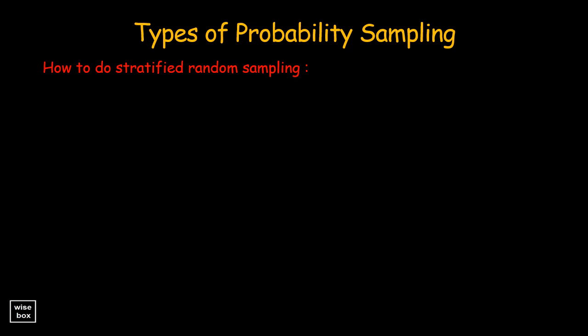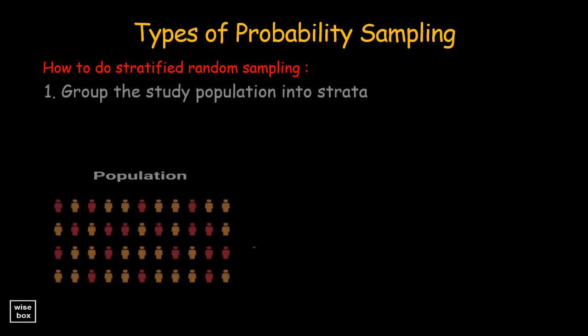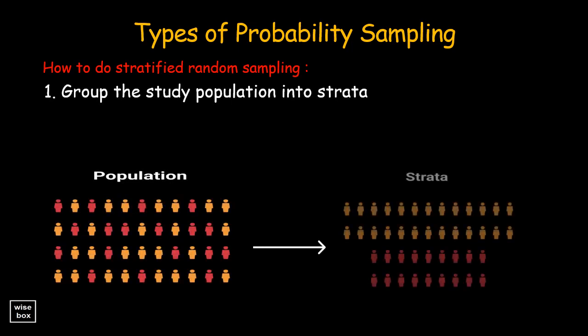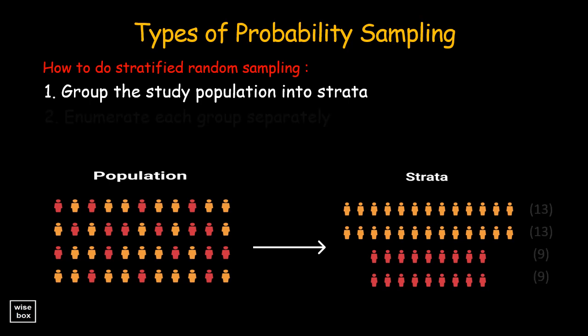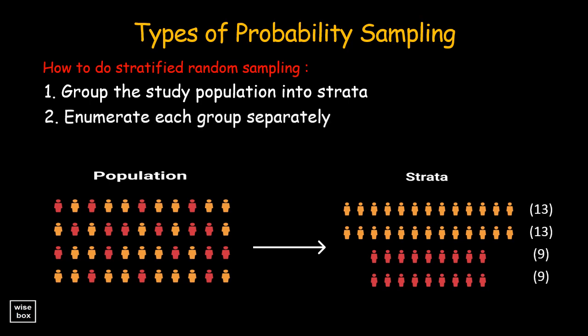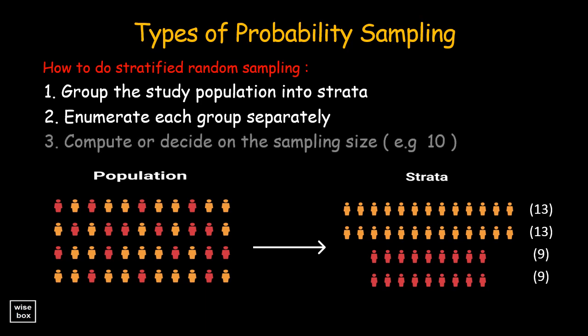Here's how to do stratified random sampling. First, group the study population into strata, or into groups, that share a given characteristic. Then enumerate each group separately. Next, compute or decide on the sampling size based on the total population. For example, the sample size is 10.